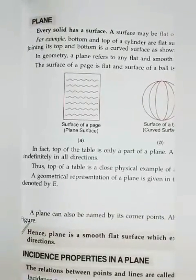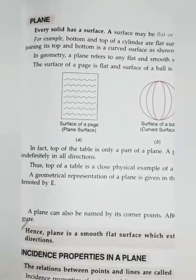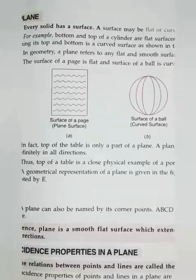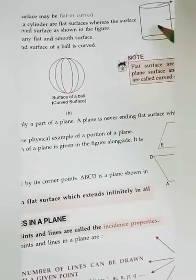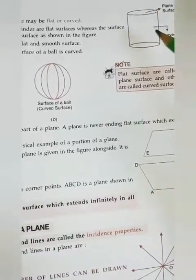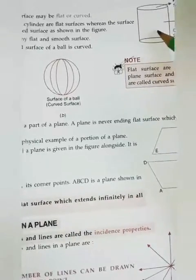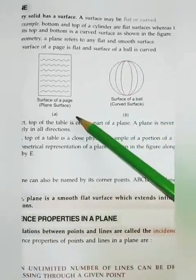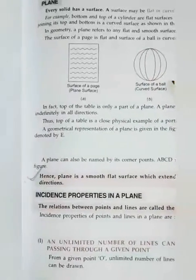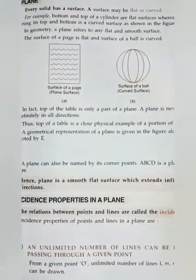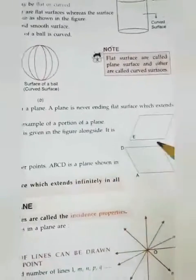Then comes to plane. What is a plane? Every solid has a surface. A surface may be flat or curved. Suppose this is a cylinder. Then cylinder has one plane surface and one curved surface. This is the example of plane surface and this is the example of a curved surface. A plane can also be named by its corner points: A, B, C, D, like this. This is a plane surface. So we can name it ABCD.